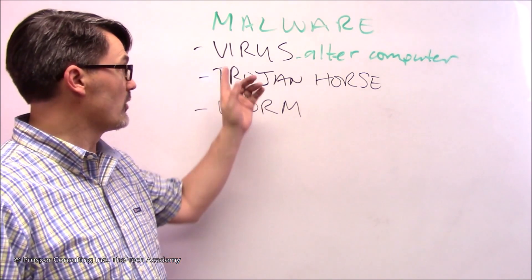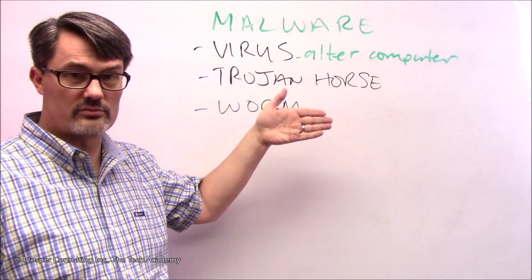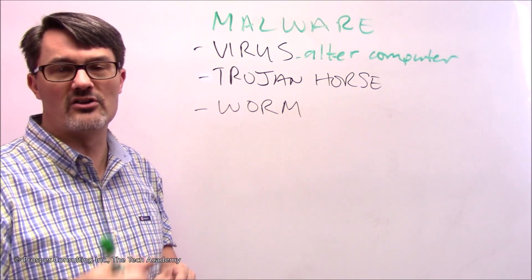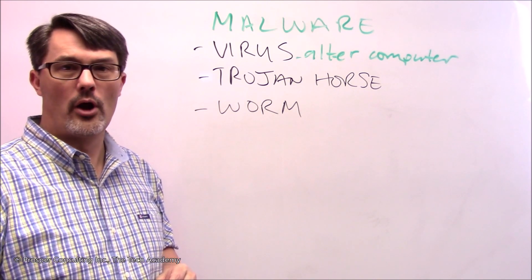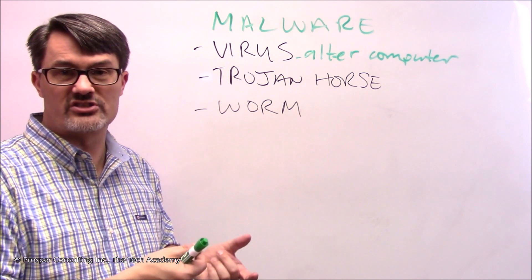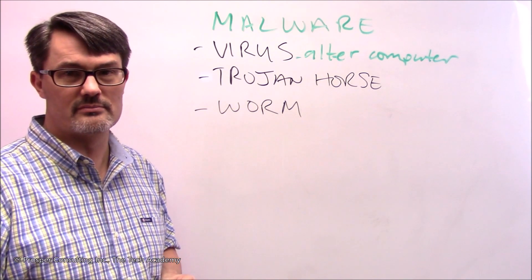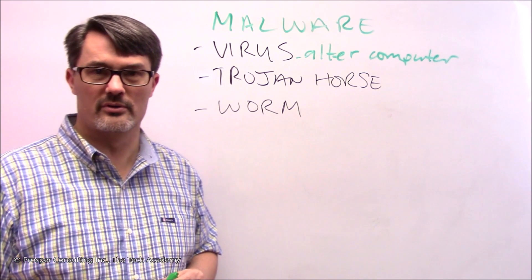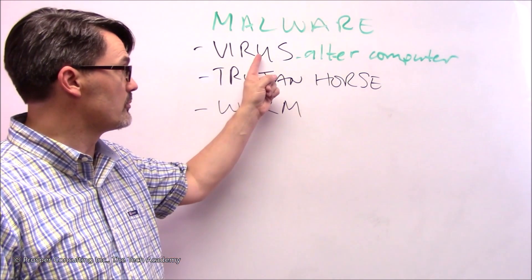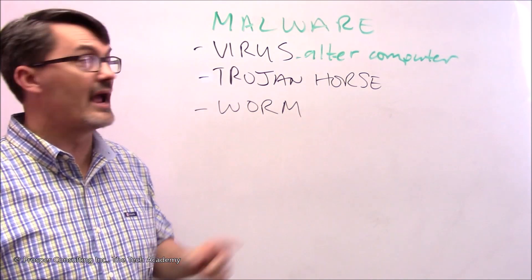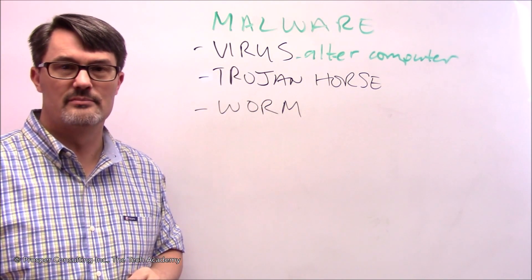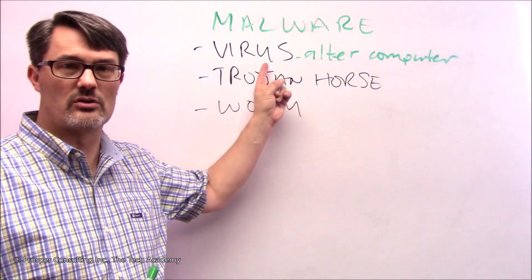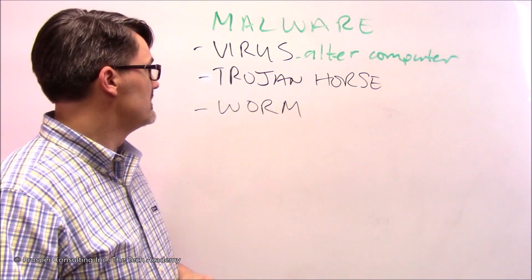Part of what a computer virus can do once it gets installed and automatically starts is make copies of itself and put them elsewhere on your computer, or onto a storage device attached to the computer. Now that storage device, if you use it on a second computer, can put that virus on that second computer, and so on. The virus can spread much the same way a disease virus can spread, but it's a digital computer program that spreads.